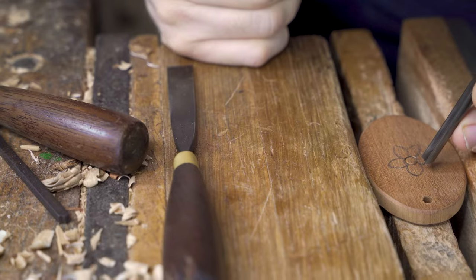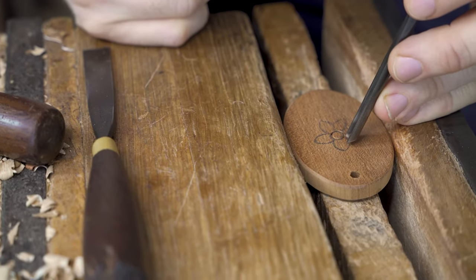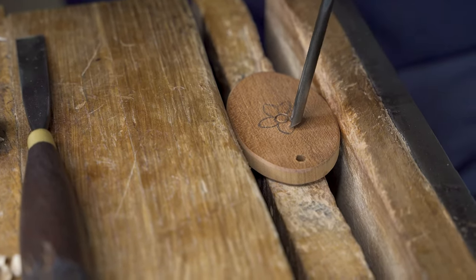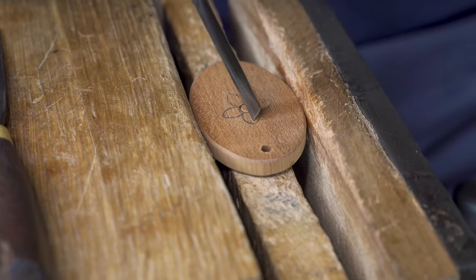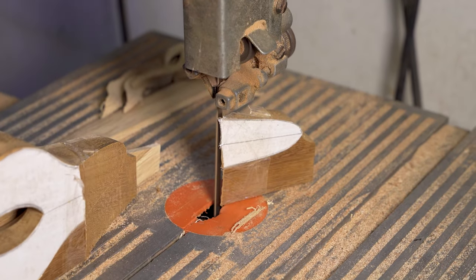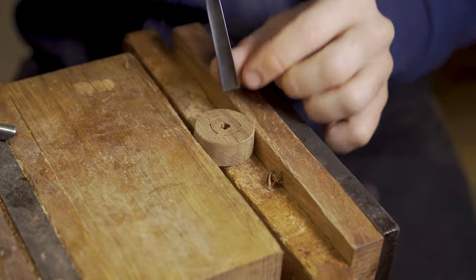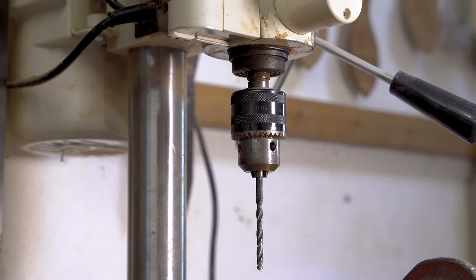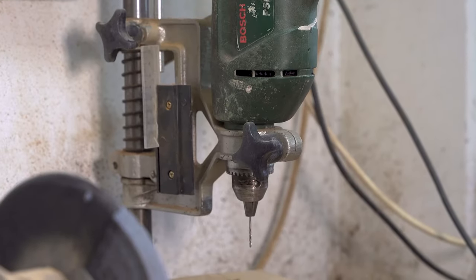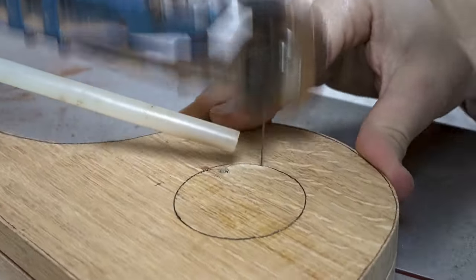When we started our family workshop many years ago, some of our first investments included a table saw, a bandsaw, hand carving tools, a vice, and a pillar drill long before we ever considered buying a scroll saw.